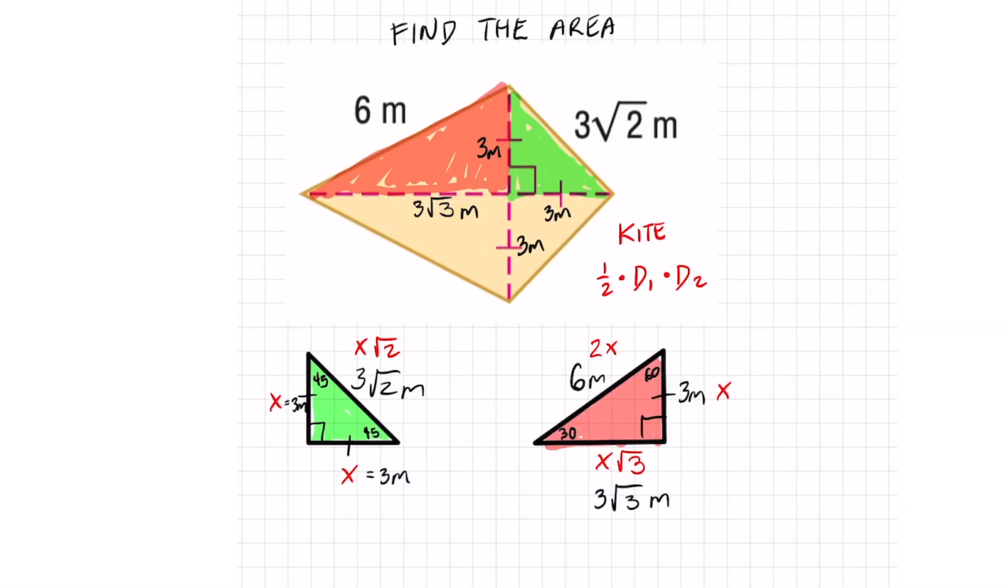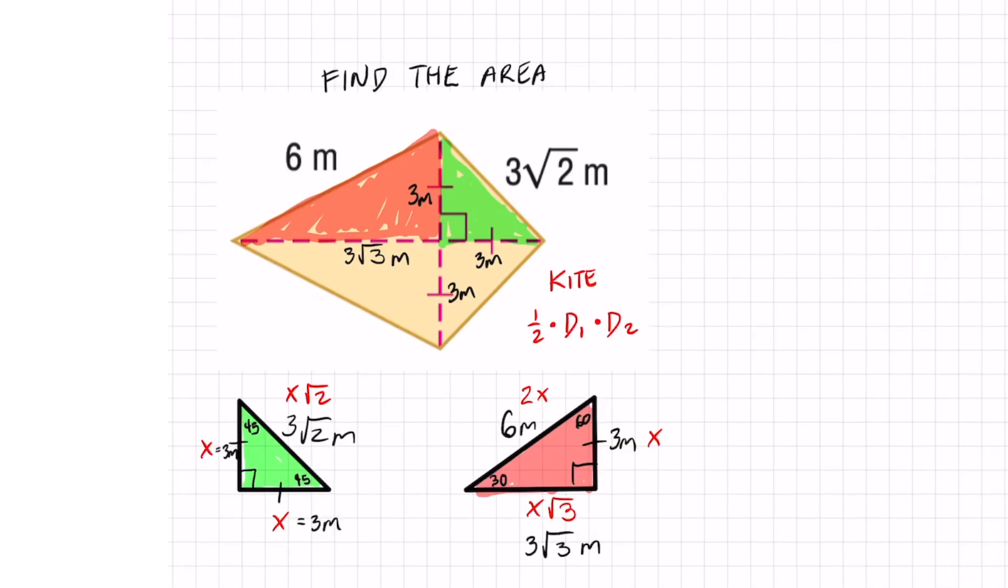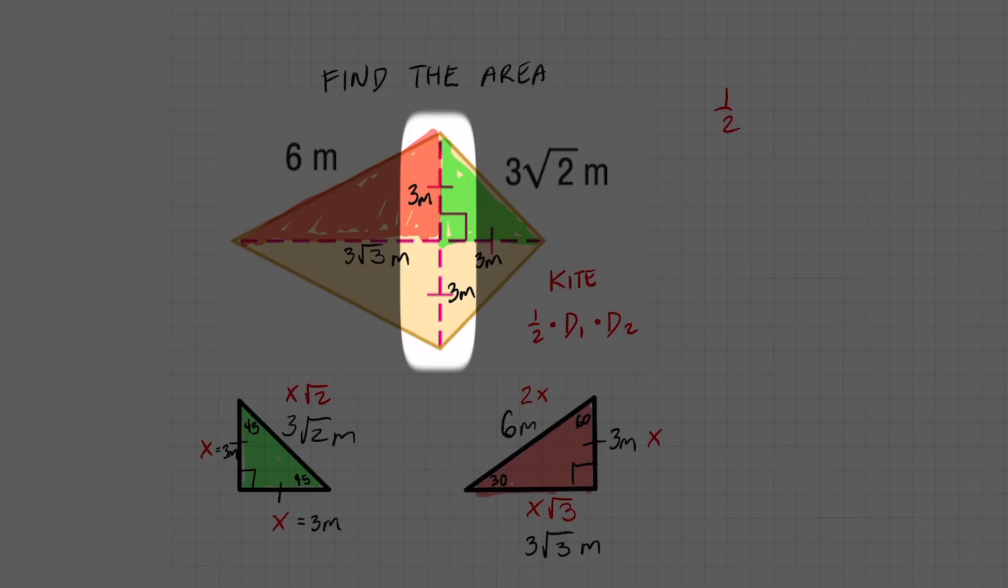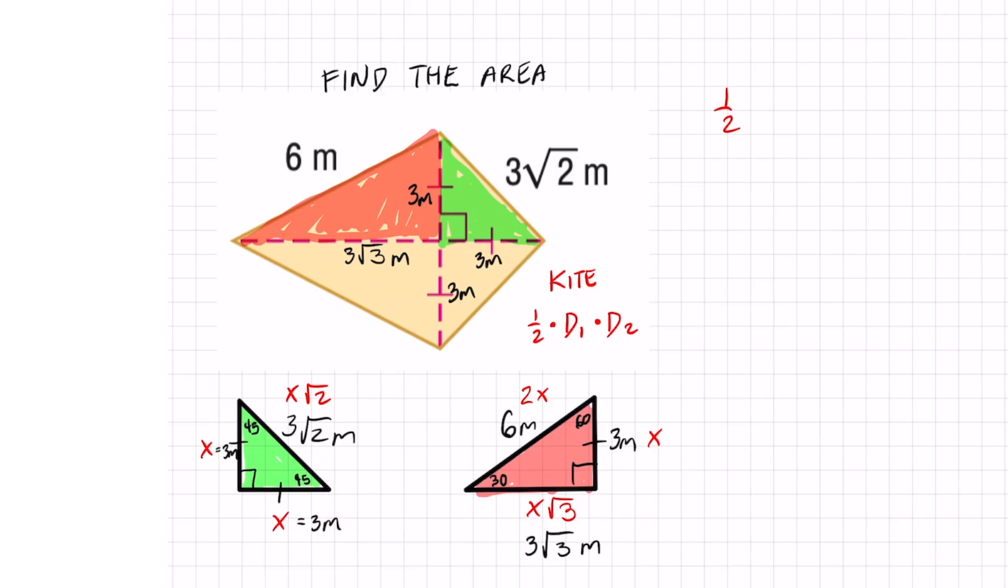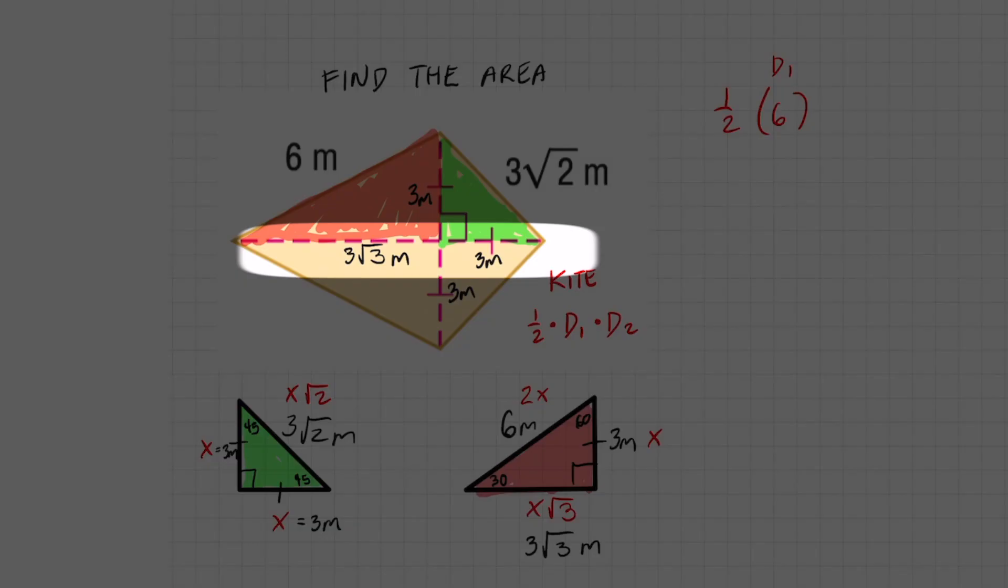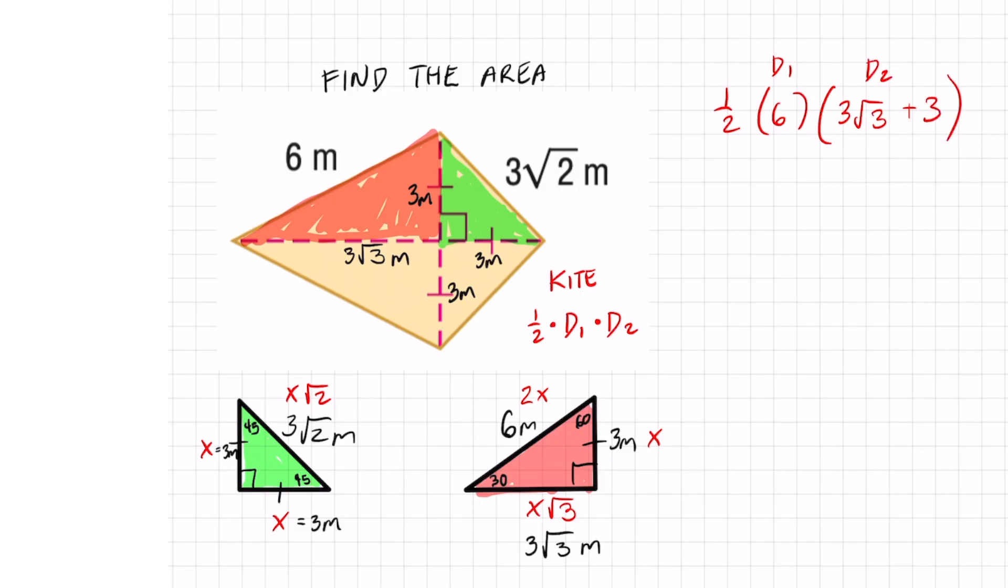We're almost done. So the area of a kite is one half. Focus on the first diagonal. It is just three and three. Three plus three is six. The second diagonal is a little different because we can't combine those terms. So we're going to write that as three root three plus three. All right, let's simplify this and we got ourselves our area.